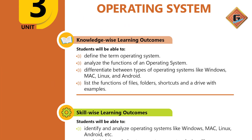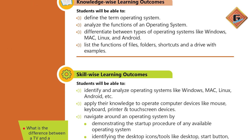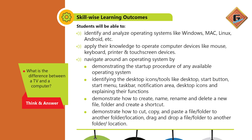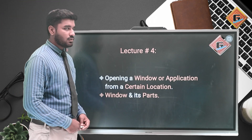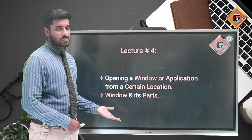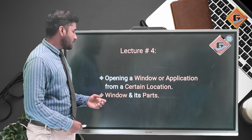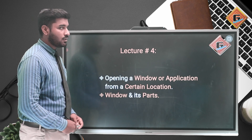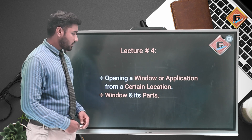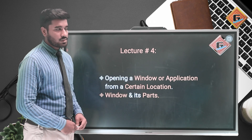We are studying computer science for grade 6. The title of lesson number three is Operating Systems, and lesson number four is about opening a window or application from a certain location. We will learn how to open a window, its parts, and how many parts one window has.